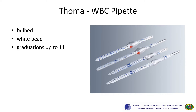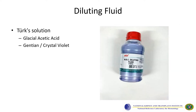The WBC pipette is also called the Thoma pipette. It is a bulb pipette with a white bead inside and has graduations for up to 11. In manual WBC counting, we make use of a diluting fluid called Turk's solution, which is a mixture of glacial acetic acid and gentian or crystal violet. The glacial acetic acid lyses the RBCs, while the crystal violet stains the WBCs for easy visualization.